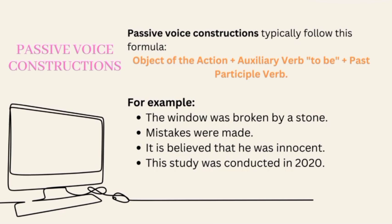'This study was conducted in 2020.' This is a passive voice construction because the subject, this study, is not the agent or performer of the action, conducting. The agent is not mentioned in this sentence, which means we want to use an impersonal tone or style. The verb phrase 'was conducted' is formed by using a form of 'to be' — was — and a past participle of a transitive verb, conducted.